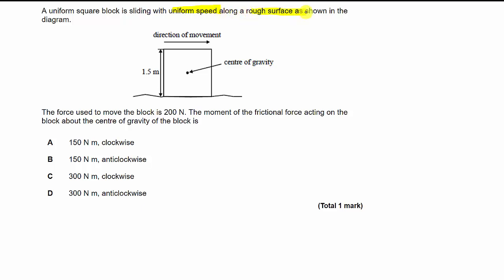A rough surface is providing some friction. So that rough surface is providing friction in the opposite direction to the direction of movement. Because that's the way friction works. The force used to move the block is 200 Newtons. The moment of the frictional force acting on the block about the centre of gravity, so we're talking about taking moments about here. Let's have a think about this. We've got a force of 200 Newtons acting from the floor in this direction. Maybe it's being pushed here. We don't really know. It doesn't really matter. So it's like we're taking moments from here.